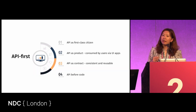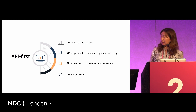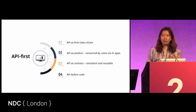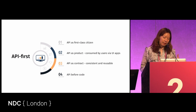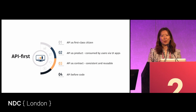The idea here is that we should think about API first. We think about API as a first-class citizen. We think about API as a product. We use API as a contract. API is always before code. And one of the stories here is something I've learned through working on projects.